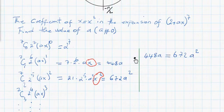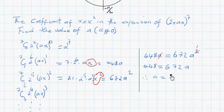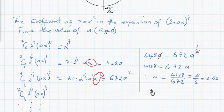We can cancel one a out. If we do that, it remains one a here. This is going to give us 448 equals 672a. Therefore, a will be equal to 448 divided by 672. And if you plug it in the calculator, this is going to give you 2/3, or 0.66.